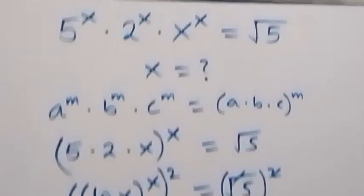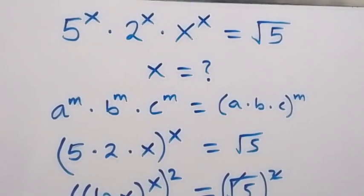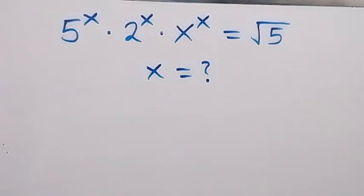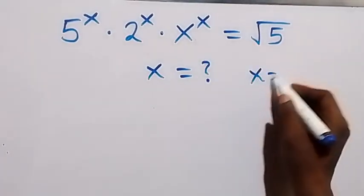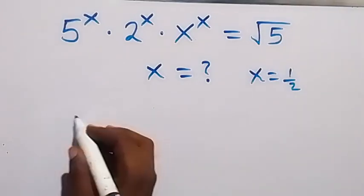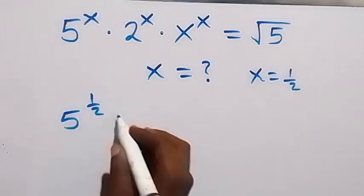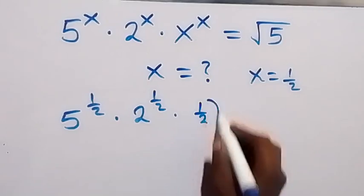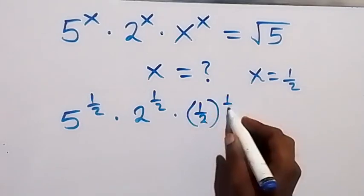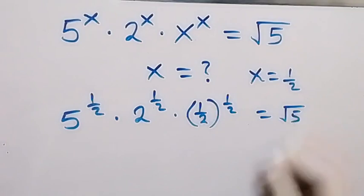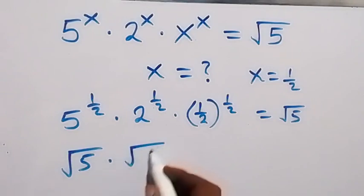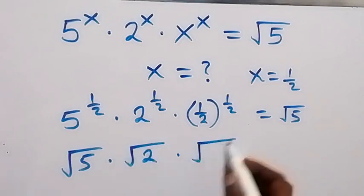Now to check, we can substitute the value of x which is one half. This becomes 5 raised to power half, times 2 raised to power half, times one half raised to power half. Is this equal to root 5? This is square root of 5 times square root of 2 times square root of one half.